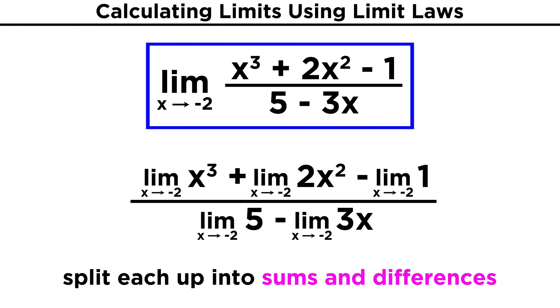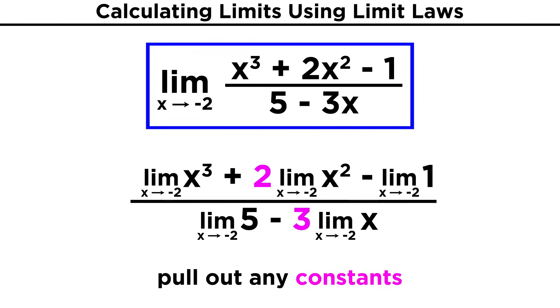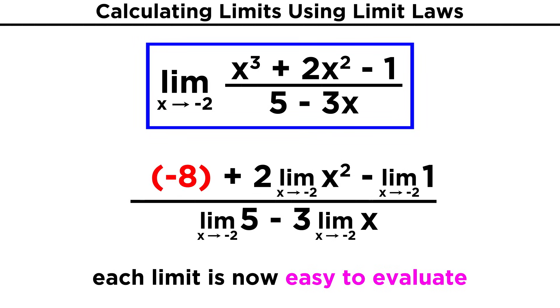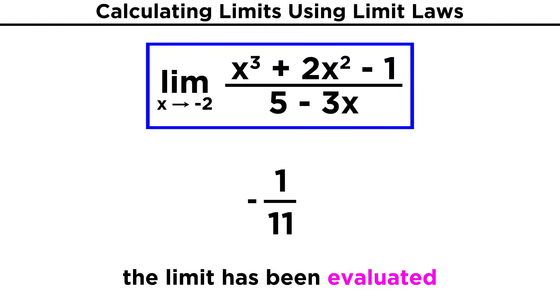Furthermore, we can split each of those up into individual terms, because of the laws regarding sums and differences. And lastly, any constants operating on variables can be pulled outside of the limit because of the law we know regarding constants. We may be left with lots of limits, but all of them are easy to evaluate. For x cubed, we get negative eight. For x squared, we get four, times two is eight. And one is a constant, so that remains one. On the bottom, five remains five, and x is negative two, times three is negative six. So after doing some arithmetic, we end up with negative one eleventh.